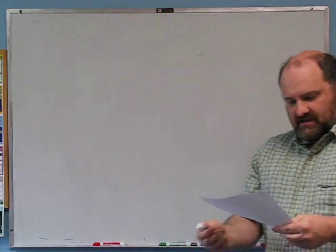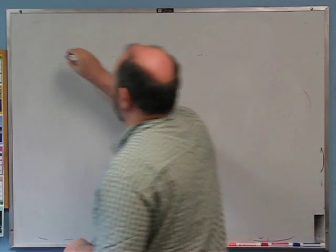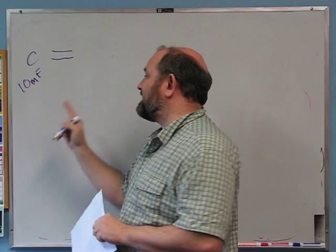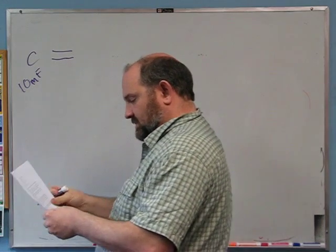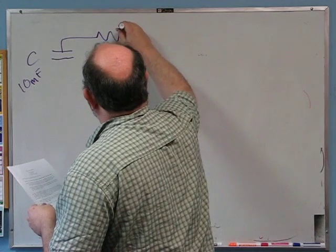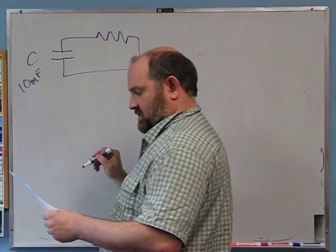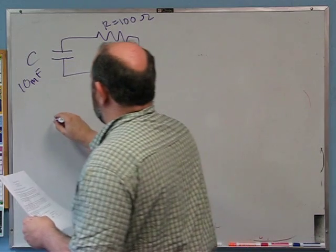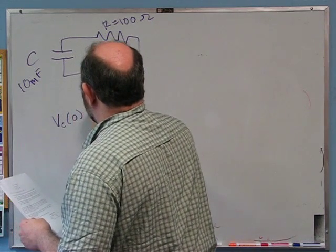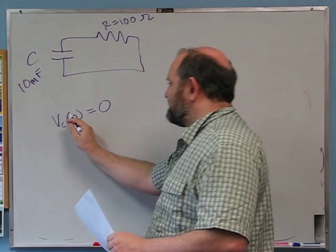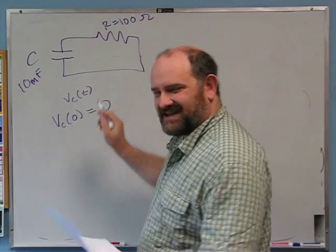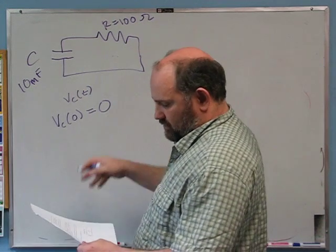Problem 3: a capacitor with capacitance C equals 10 millifarads — note: millifarads, not megafarads; the difference is a factor of a billion — connected in series with a resistor R equals 100 ohms. The capacitor starts charged, so V_C at time zero equals V_0. How long does it take for the capacitor voltage to decrease to 1% of its starting voltage?